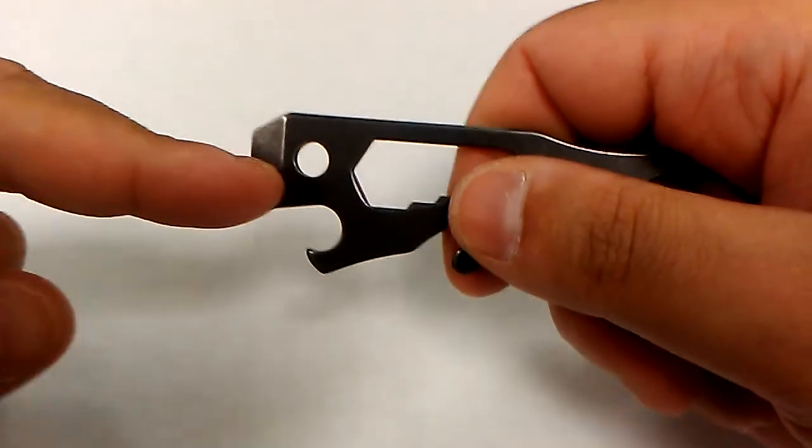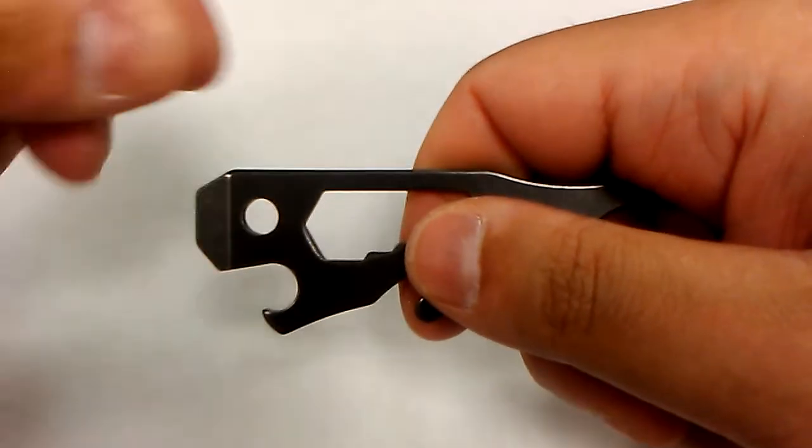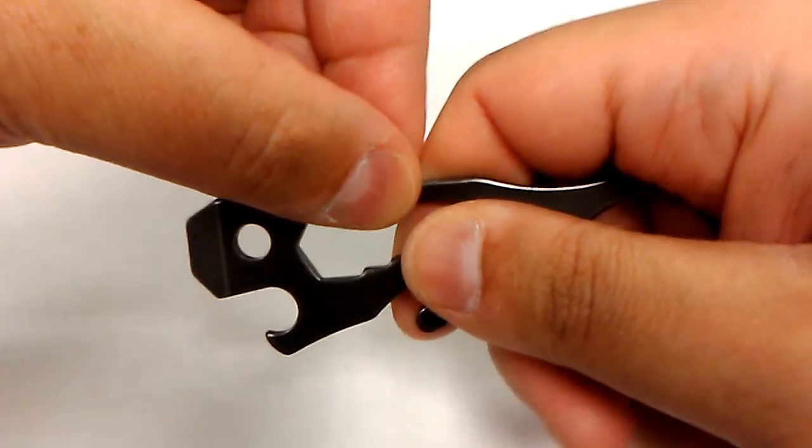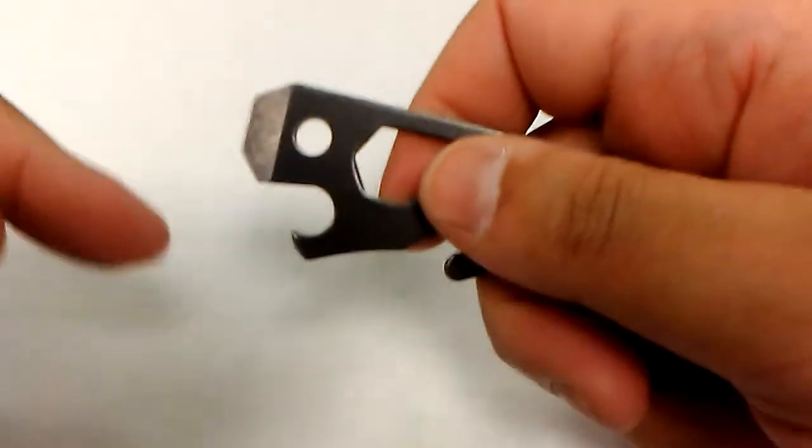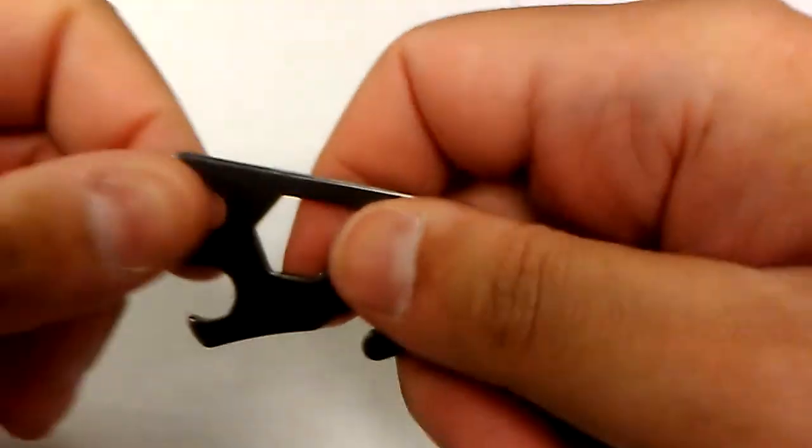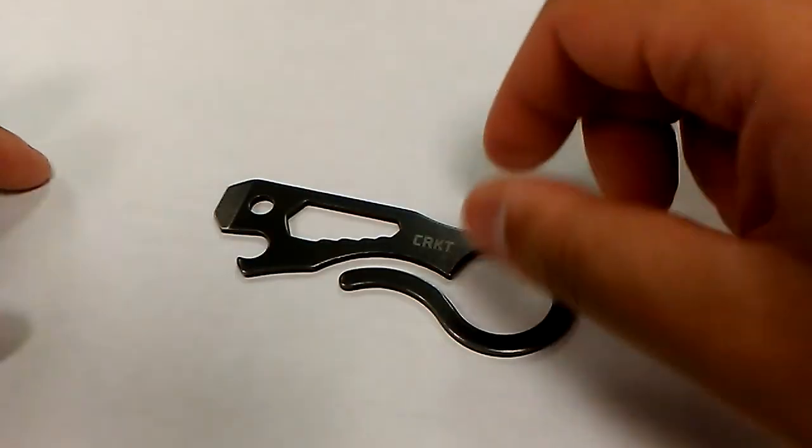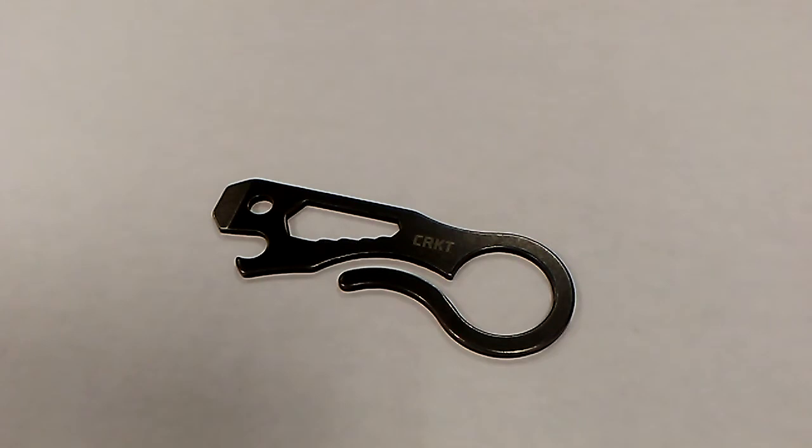You can EDC your keys on it. Again, make sure the split ring is wide. Fold the split ring over on top. Use it as a bottle opener. Use it as a large screwdriver. It actually works pretty well, considering its limited functionality.